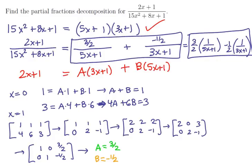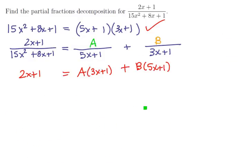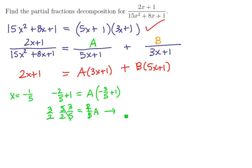We picked x=0 and x=1 as easy values to work with. But we can choose values designed to make terms cancel. Setting x=-1/5 makes the B term disappear. We get -2/5+1 = A(-3/5+1), which gives 3/5 = 2/5·A, so A = 3/2, just like before. It's the exact same formula.